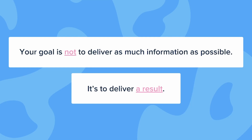The first one is obviously bad because you end up with nothing, but the second one is actually the wrong approach too, because you end up with way too much. The goal of your course is not to deliver as much information as possible — it's to deliver a result. That's what your students are paying for: an outcome.